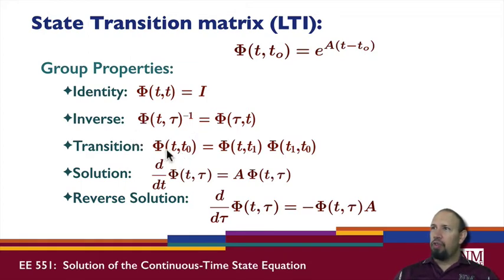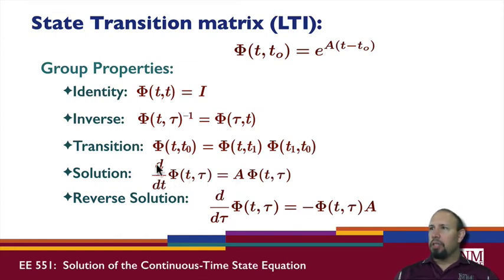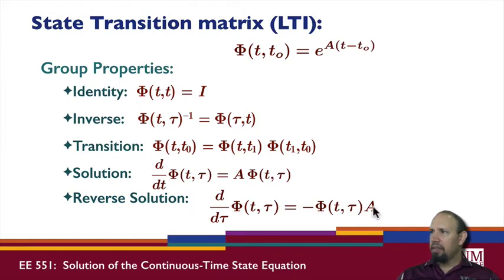Of course, computing the matrix in the first place is where the complexity comes in. This matrix also satisfies a transition property: the state transition matrix from t to t₀ can be written as the product of the state transition matrix from t to t₁ and from t₁ to t₀. Similarly, the derivative of the state transition matrix with respect to the first argument t equals A times the state transition matrix, and the derivative with respect to the second argument τ gives minus the state transition matrix times A. It turns out these two actually commute, so this is one of those rare cases when matrices commute.